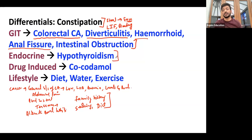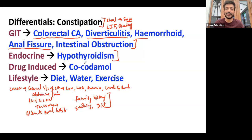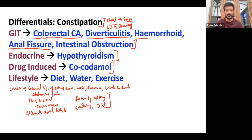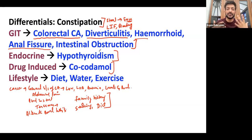Endocrine causes like thyroid can cause constipation — hyperthyroid gives diarrhea, hypothyroid gives constipation. You can ask thyroid-related questions and check thyroid function tests. There are also many drugs that can cause constipation — opioids like morphine, codeine, and co-codamol, which is codeine plus paracetamol. To summarize: confirm whether it is constipation or obstipation — complete obstruction — and ask about nausea and vomiting, which points toward intestinal obstruction. These are the key things to assess when you get a case of constipation.